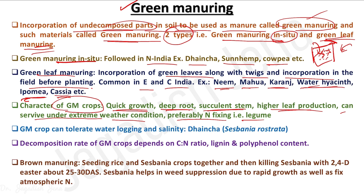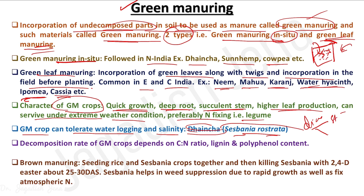A green manure crop should be able to tolerate waterlogging and salinity. Dhaincha (Sesbania rostrata) can tolerate both. A peculiar characteristic of Dhaincha is that it is a diazotroph — it can fix atmospheric nitrogen through nodules in both the stem and the root.